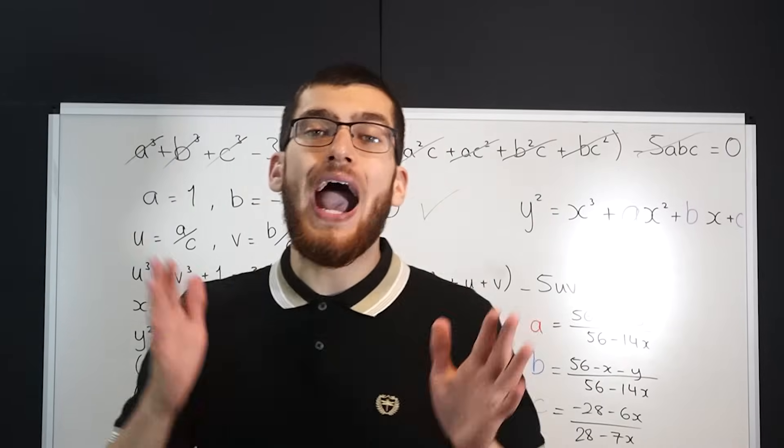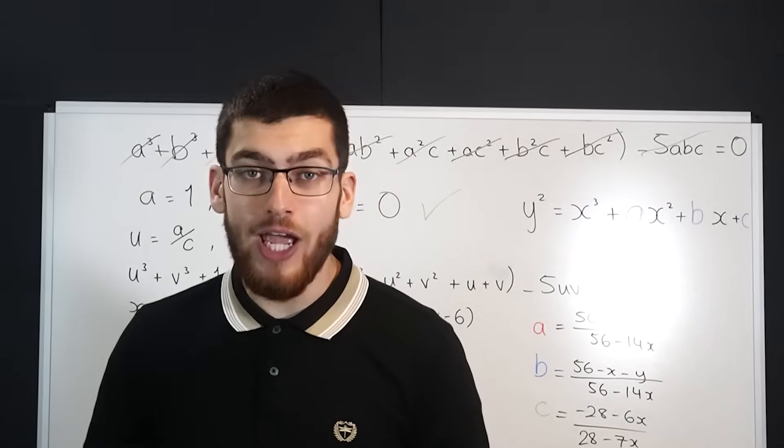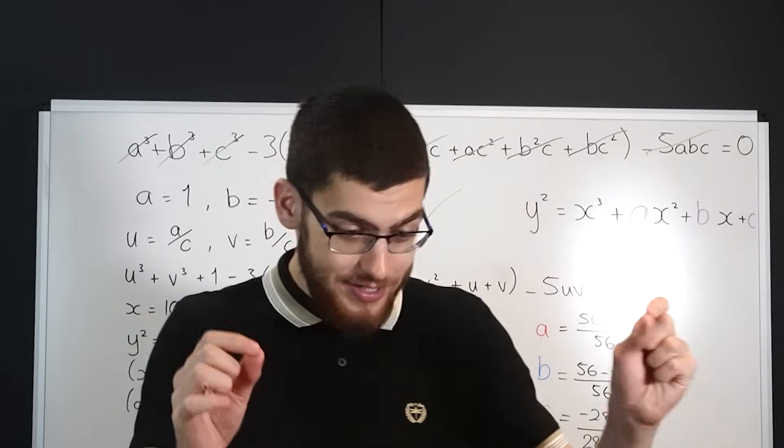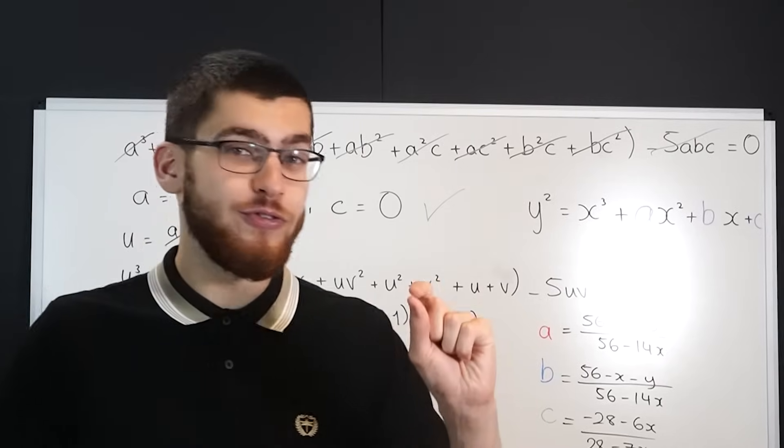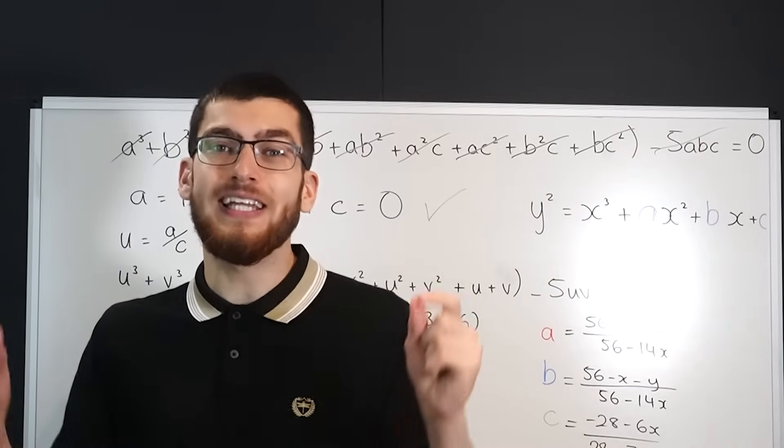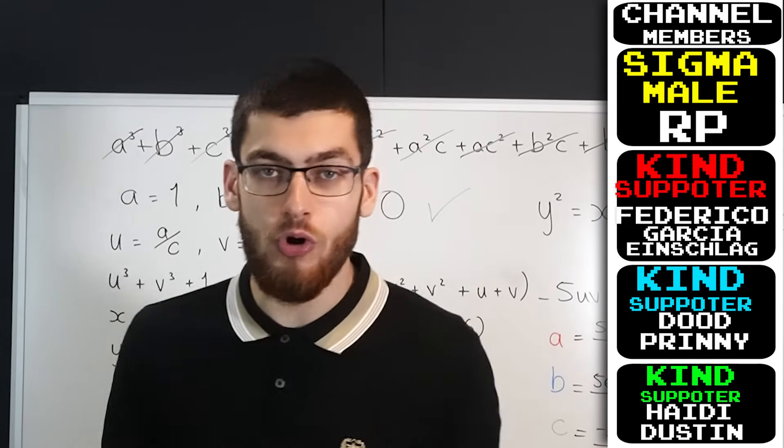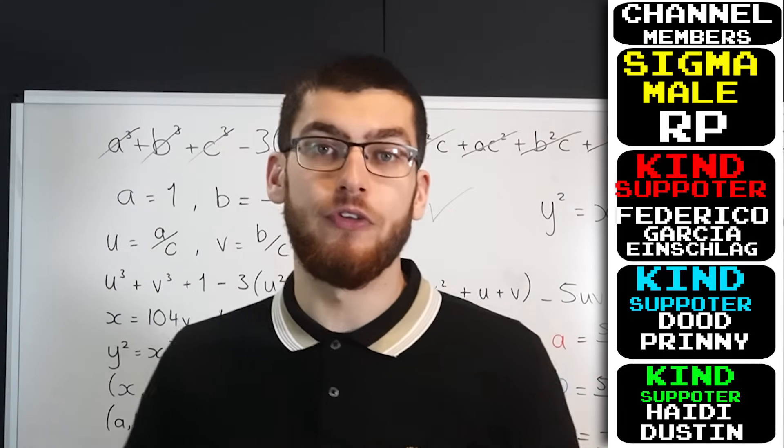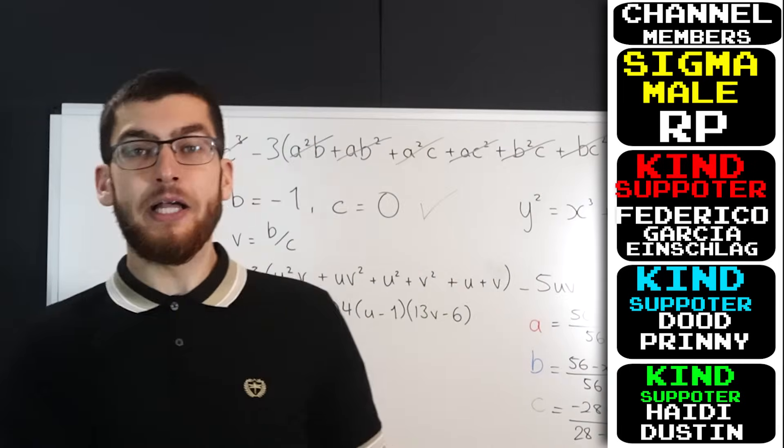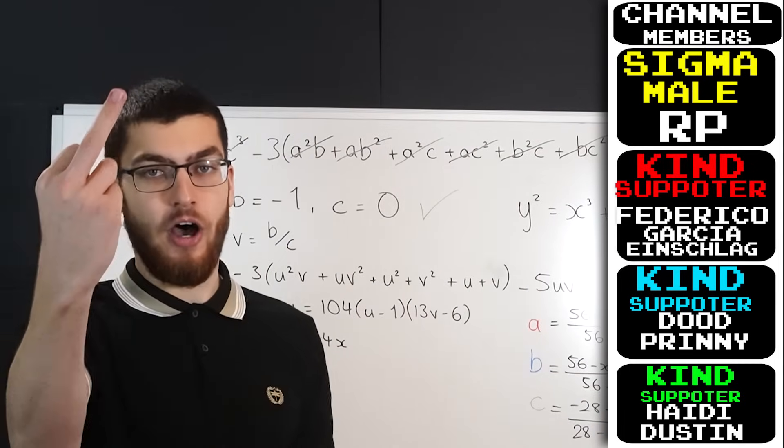This just goes to show how crazy Diophantine equations can get. Just this simple equation here gives us solutions which go up to roughly 80 digits and if we had numbers higher than 4 like for example 100 or 200 then we're talking thousands upon thousands of digits. Click and watch this video if you want to see more and piss off!